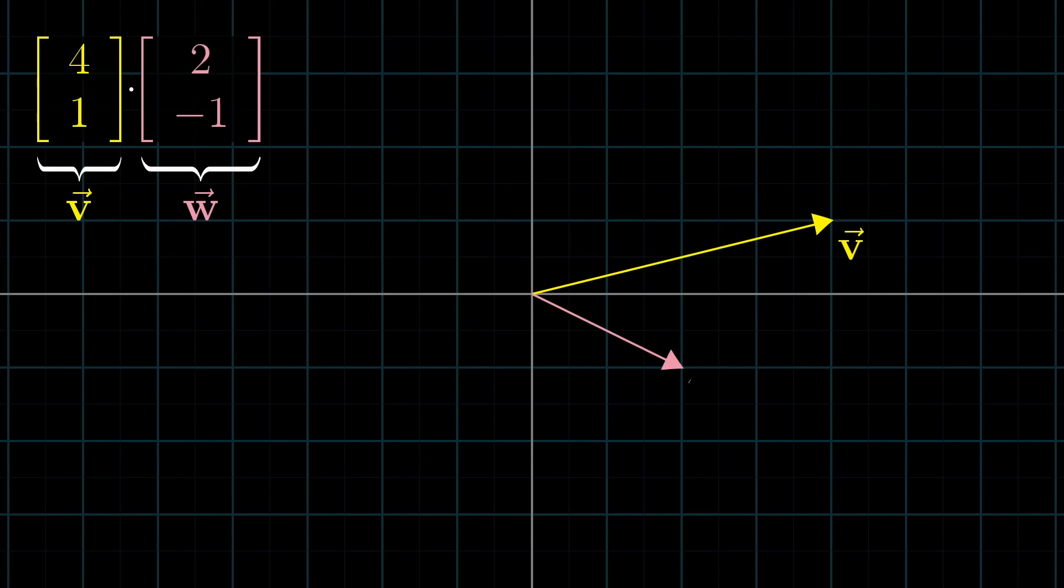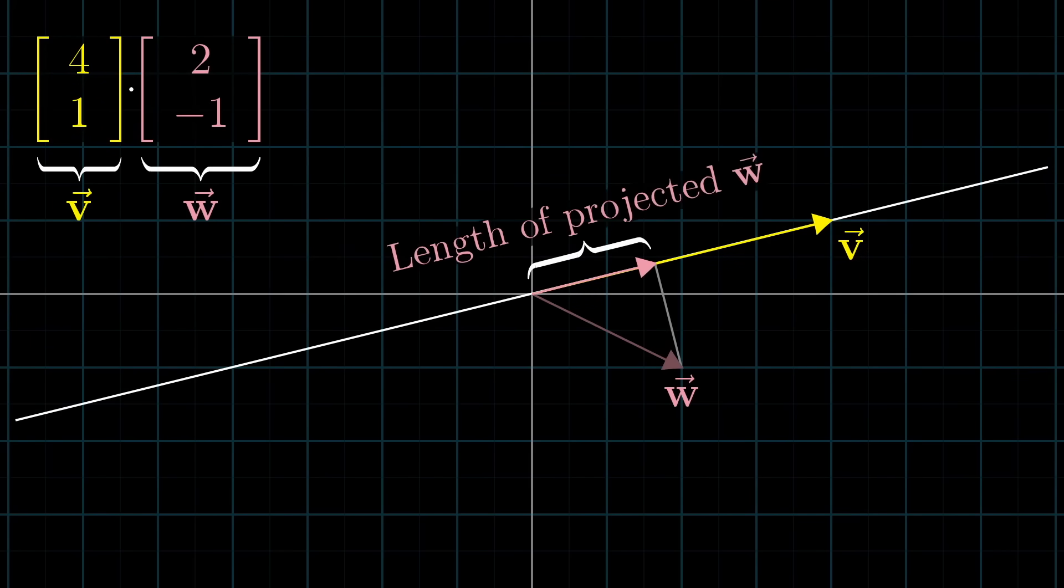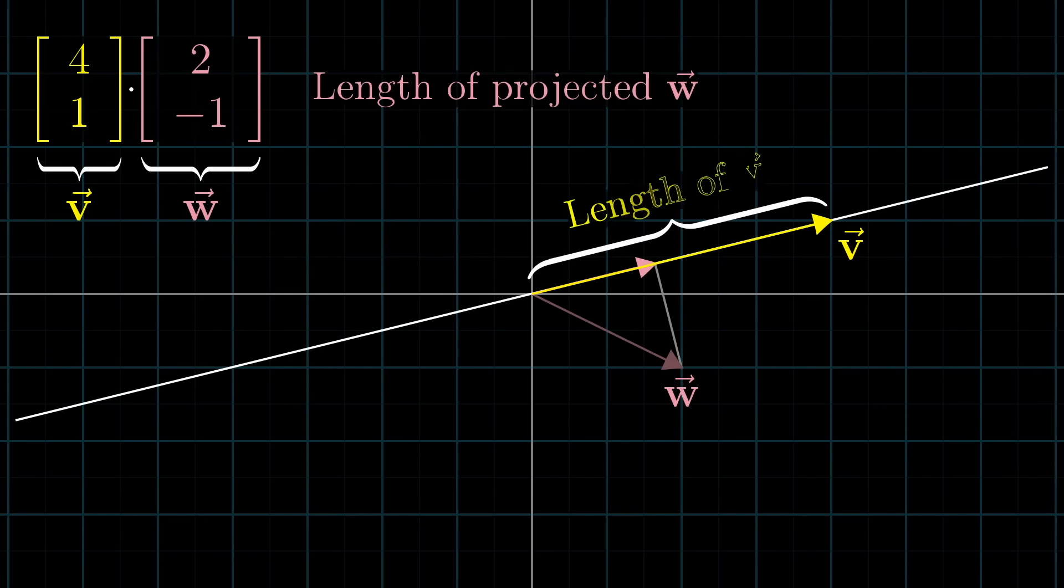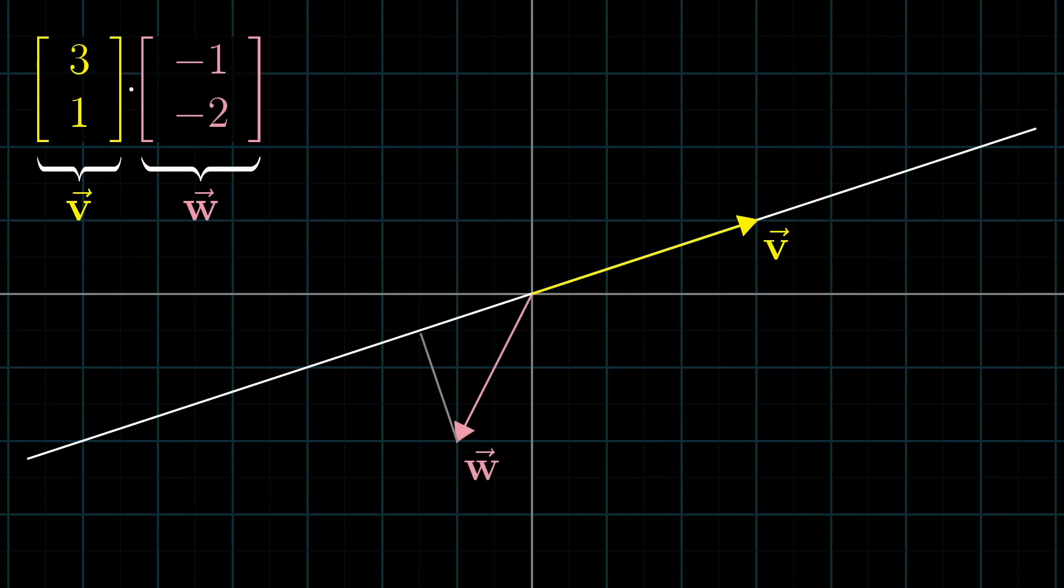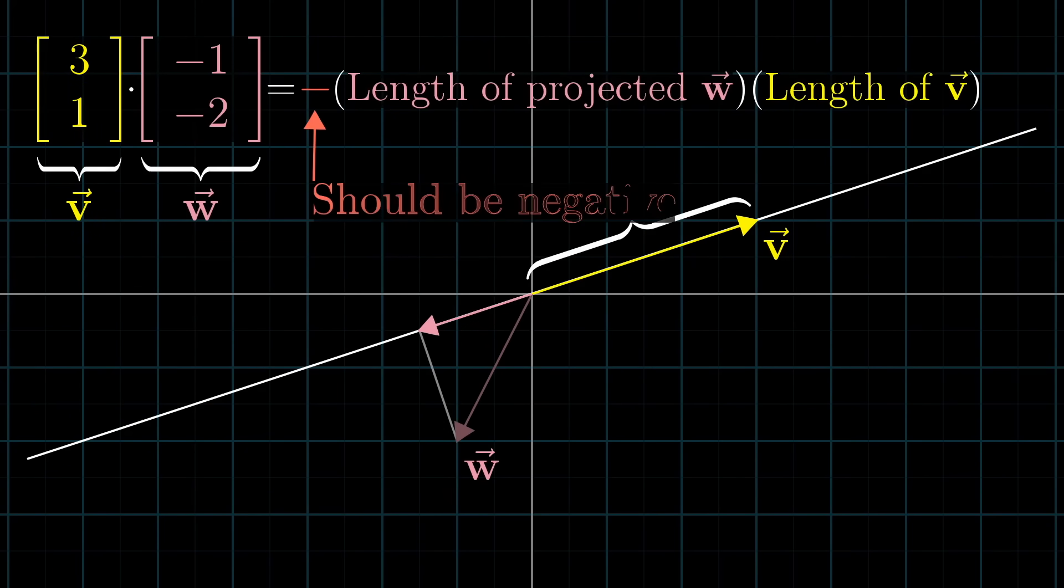To think about the dot product between two vectors, v and w, imagine projecting w onto the line that passes through the origin and the tip of v. Multiplying the length of this projection by the length of v, you have the dot product v dot w. Except when this projection of w is pointing in the opposite direction from v, that dot product will actually be negative.